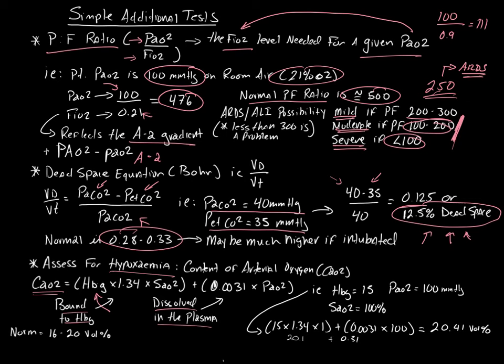Then we take our dissolved, your PaO2, and then you multiply it by this constant here, 0.0031. So every 1 millimeter of mercury of oxygen pressure is 0.0031 milliliters of oxygen. Quite a bit less.